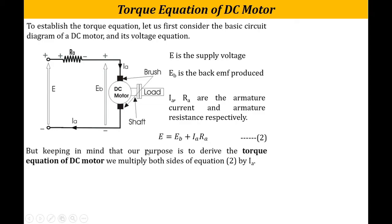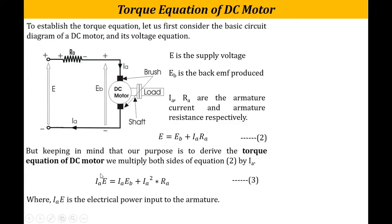To find the torque equation we multiply throughout by the armature current Ia. So the left-hand side becomes Ia × E, giving: Ia × E = Ia × Eb + Ia² × Ra. Here Ia × E is the electrical power input given to the armature, and Ia² × Ra is the copper loss in the armature.